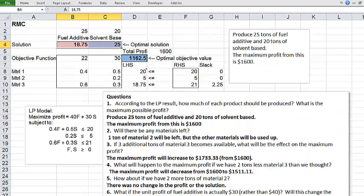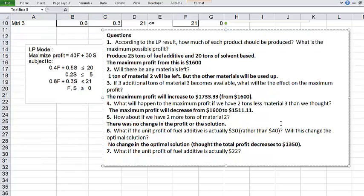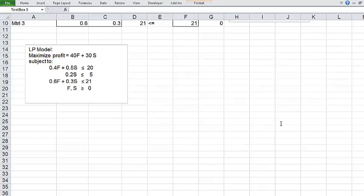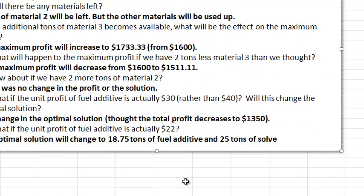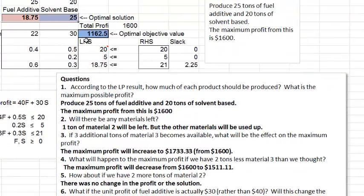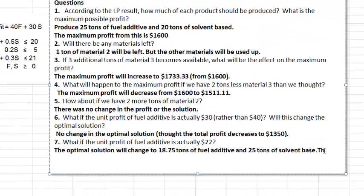So what happened? Before it was 25 and 20. Now 25 went down to 18.75 and 20, the solvent base value went up to 25. So this is kind of what we expected. But we had to check. So this gives us the 18.75 and 25 as the optimal solution values. And that's what we'll put down as the answer. And back to the original sheet. The optimal solution will change to 18.75 tons of fuel additive and 25 tons of solvent base. As a bonus, let's put down the total profit as well, $1,162.50. The total profit will change to $1,162.50.